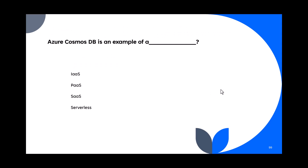Question 99: Azure Cosmos DB is an example of blank. Options: IaaS, PaaS, SaaS, or serverless. The answer is PaaS — Azure Cosmos DB is a platform as a service.